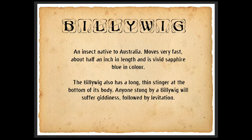The first creature I want to discuss is called the billywig. As you can see, this is an insect native to Australia. It moves very fast, about half an inch in length, and is vivid sapphire blue in color. The billywig also has a long thin stinger at the bottom of its body, and anyone stung by a billywig will suffer giddiness followed by levitation.